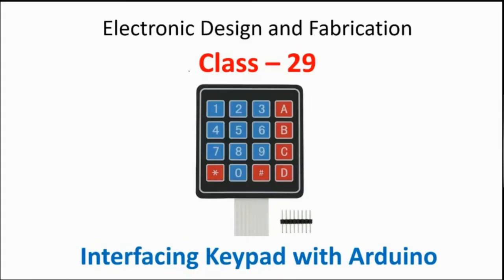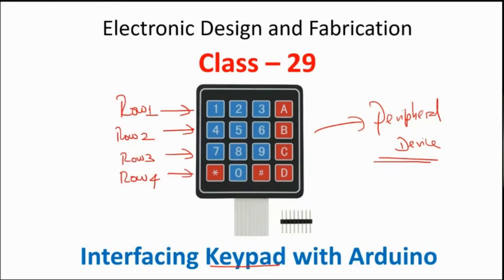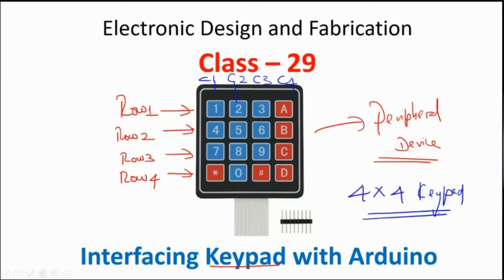The topic of today's discussion is how to interface a keypad with Arduino. This is not exactly a sensor but a peripheral device. This particular keypad has four rows and four columns — row one, row two, row three, and row four, with column one, column two, column three, and column four. We also call it a four-by-four matrix keypad.